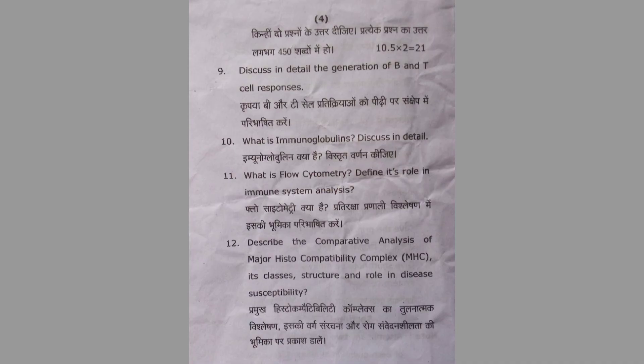Question Number Ten: What is immunoglobulin? Discuss in detail. Question Number Eleven: What is flow cytometry? Define its role in immune system analysis. Question Number Twelve: Discuss the comparative analysis of major histocompatibility complexes — its classes, structure, and role in disease susceptibility.